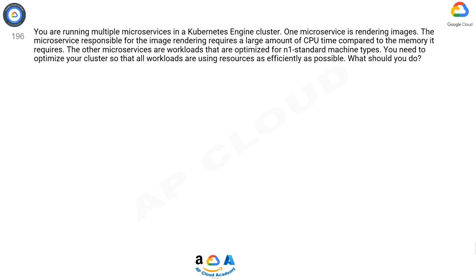Question 196. You are running multiple microservices in a Kubernetes engine cluster. One microservice is rendering images. The microservice responsible for image rendering requires a large amount of CPU time compared to the memory it requires. The other microservices are workloads that are optimized for N1 standard machine types. You need to optimize your cluster so that all workloads are using resources as efficiently as possible. What should you do?